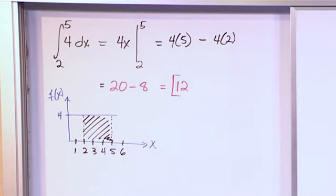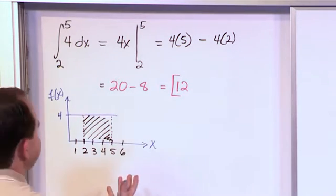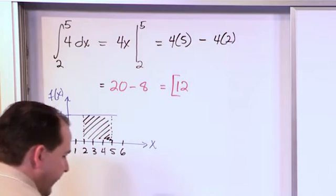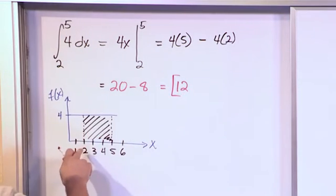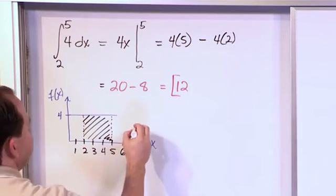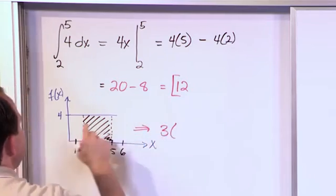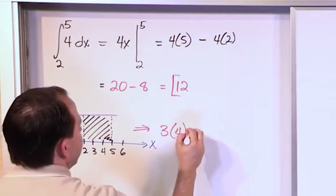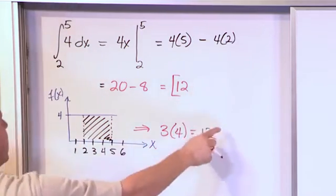So, what is the area of that region? Well, that's a rectangular region, right? So, how do you find the area of it? Well, it's going to be length times width. So, what is the length? Between 2 and 5 is going to be 3 times the height, which is 4, is 12. Which is exactly what we get.